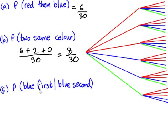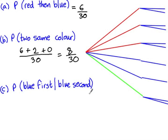What's the probability that we take a blue marble first, given that we're taking a blue marble second? If I look at the condition first — given that there's a blue marble second — I'm going to ignore all sections of the tree diagram that don't have a blue marble second. Looking at only the branches with a blue marble second, there are ten of those. And of those, how many had a blue marble first? That's two out of ten.